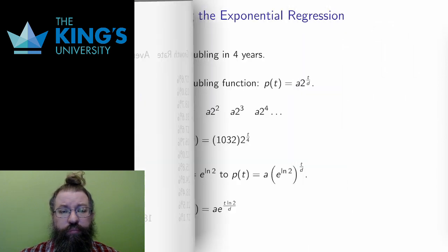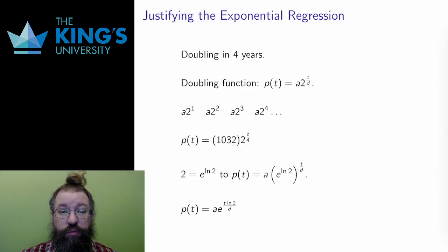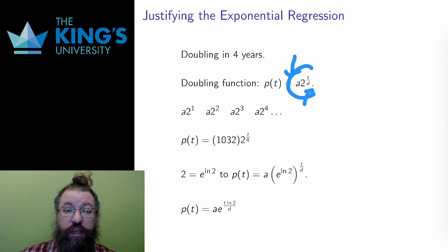What is doubling? Well, it's multiplying by 2. But repeatedly multiplying by 2 is an exponential function. If the starting value is a, and the doubling period is d, then the function is just p(t) equals a times 2 to the t over d.